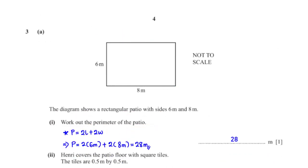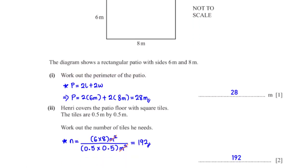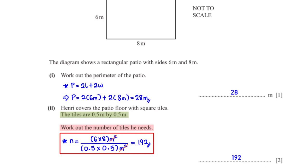The diagram shows a rectangular patio with sides 6 m and 8 m. Work out the perimeter of the patio. Using the perimeter formula for a rectangle with length 6 m and width 8 m, we get 28 m. Henry covers the patio floor with square tiles of 0.5 m × 0.5 m. To find the number of tiles, we divide the area of the patio (6 × 8 m²) by the area of one tile (0.5 × 0.5 m²), giving 192 tiles.